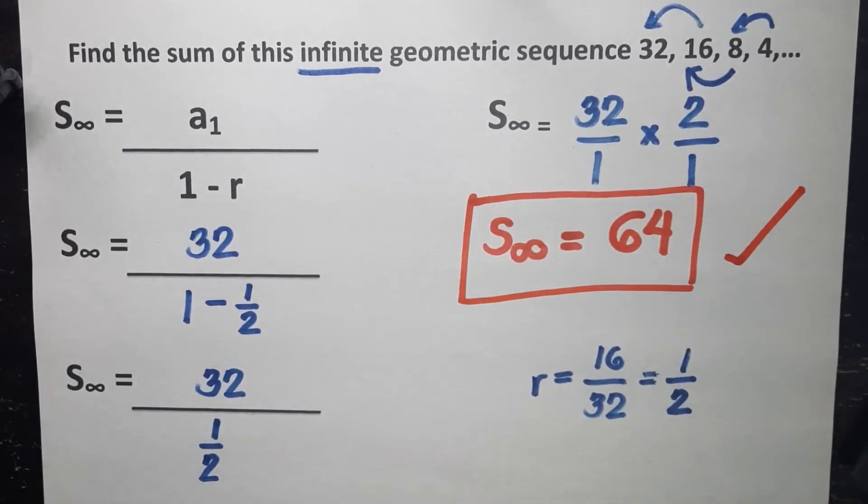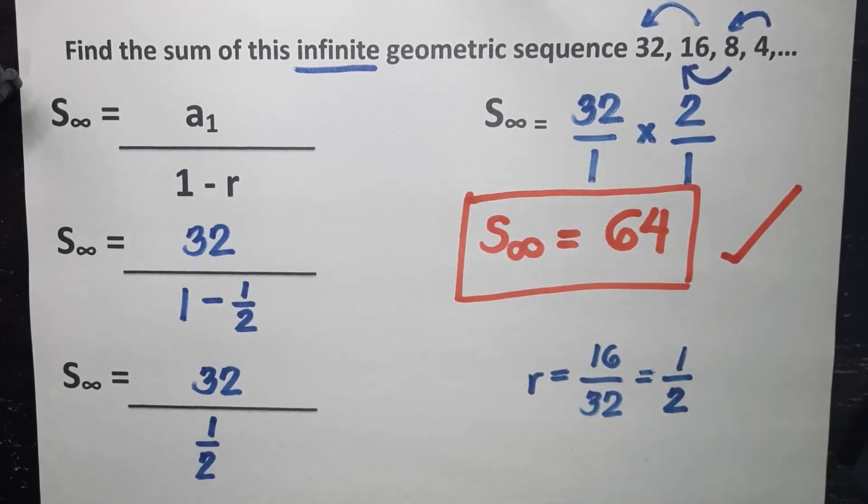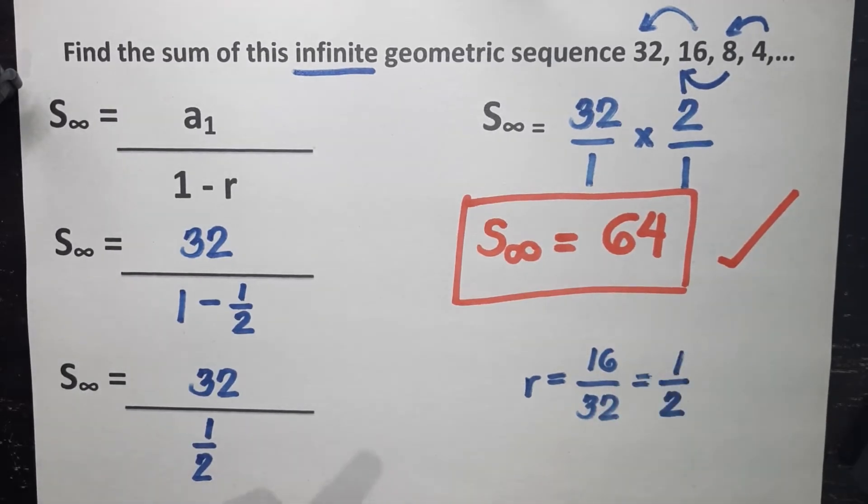So this is our final answer, which means that if you add up to infinity, the answer is 64. Because 32 plus 16 will give you 48, plus 8 will give you 56, plus 4 will give you 60. And then after that is 2, will give you 62, followed by 1, which will give you 63. And then all values that are getting smaller and smaller, you are getting close and approaching 64, which is why our answer is 64.